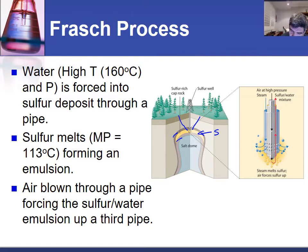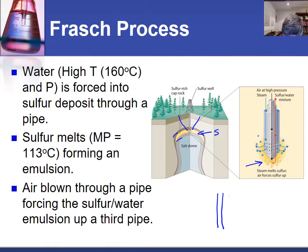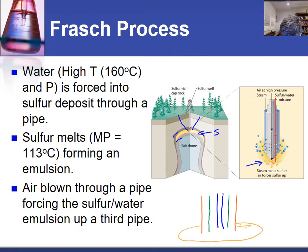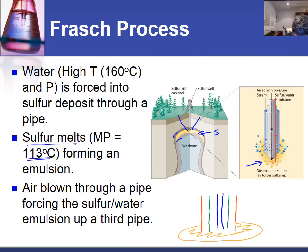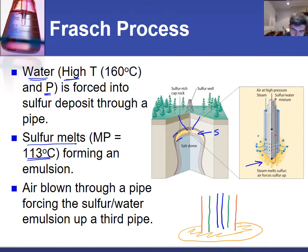An alternative is the Frasch process. The important thing here is that we have three tubes: a central tube, a second tube around that, and a third tube going around the outside — all sitting within the sulfur deposit. One of the key facts is that sulfur melts at 113°C, which is only just above the boiling point of water. If we heat water into steam and then apply high enough pressure, we can keep the water molecules close enough together to behave as a liquid.